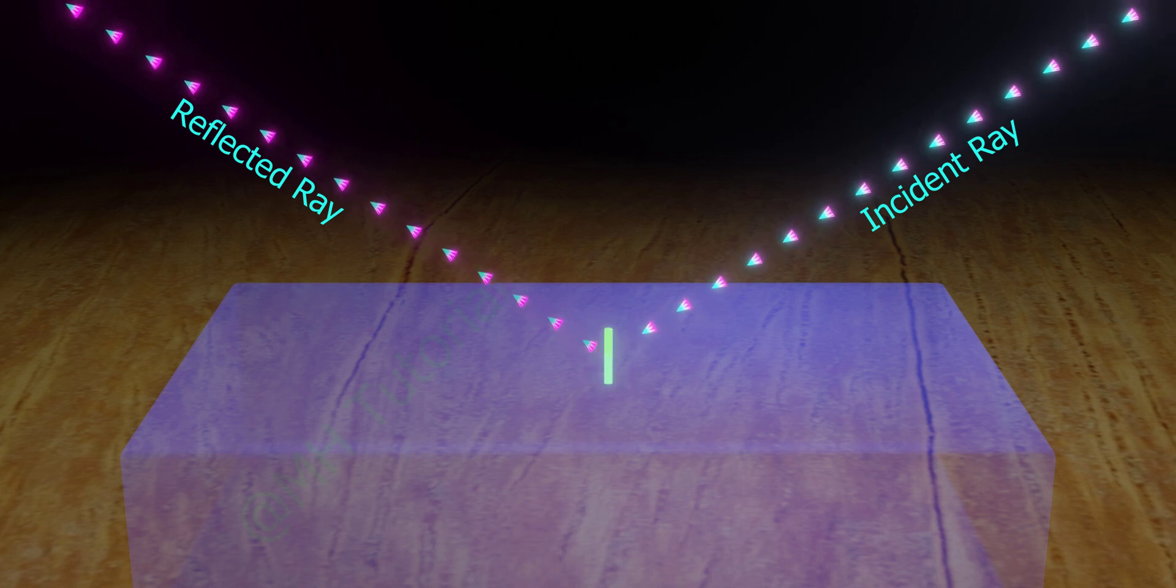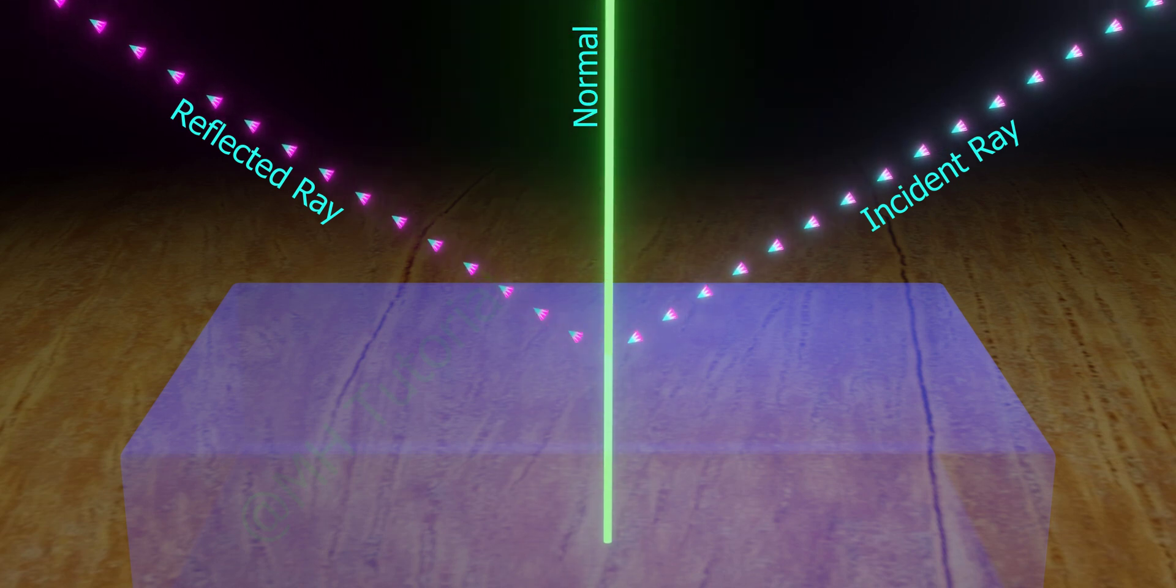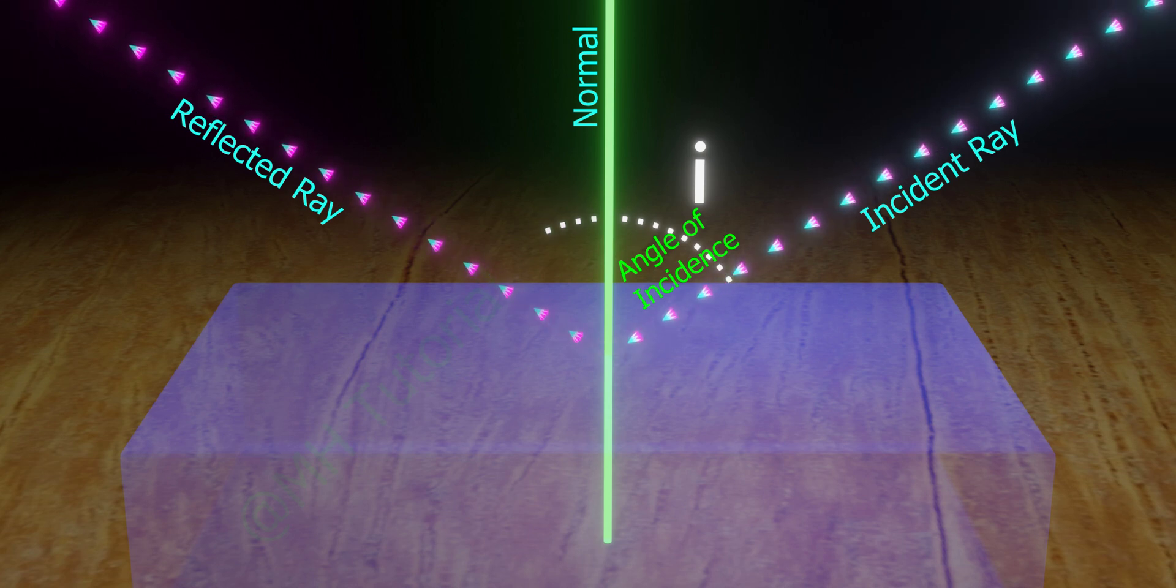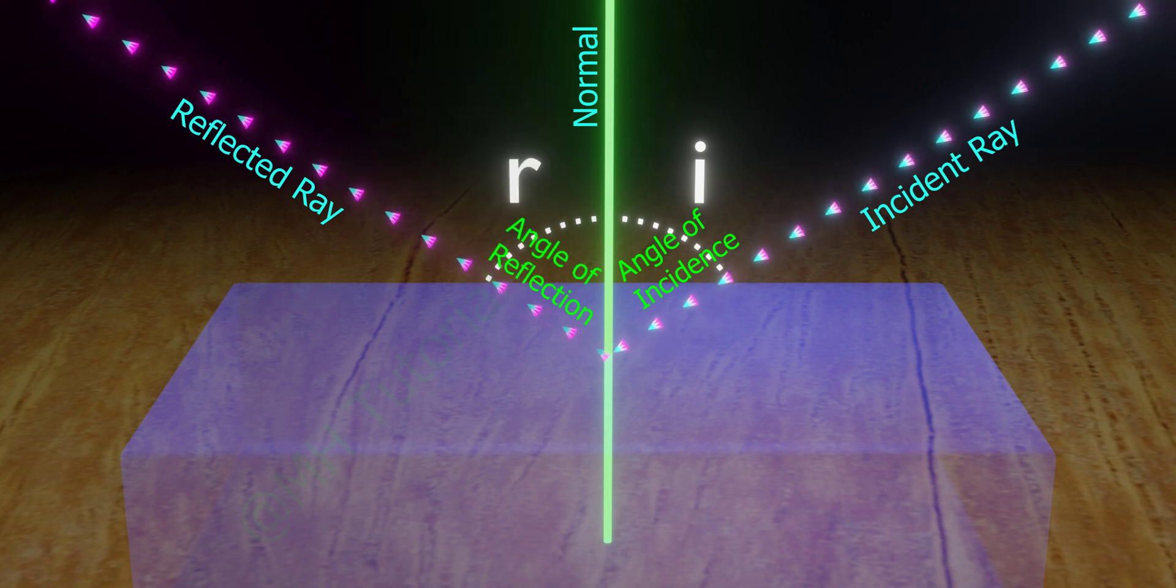A perpendicular to the plane at the point of incidence is known as normal. The angle between the normal and the incident ray is called angle of incidence. And the angle between the normal and the reflected ray is called angle of reflection.